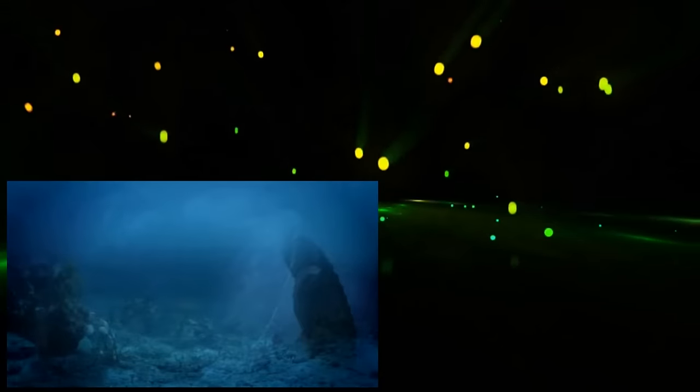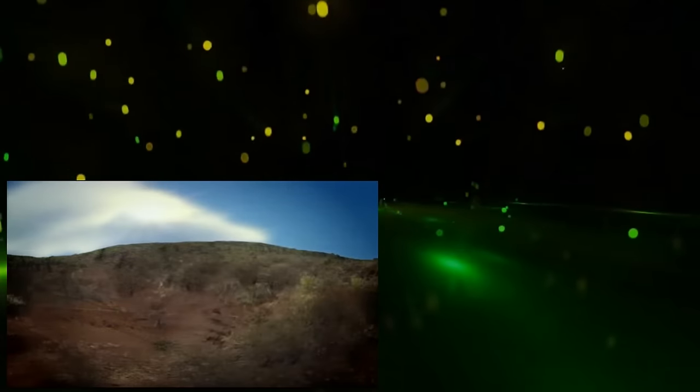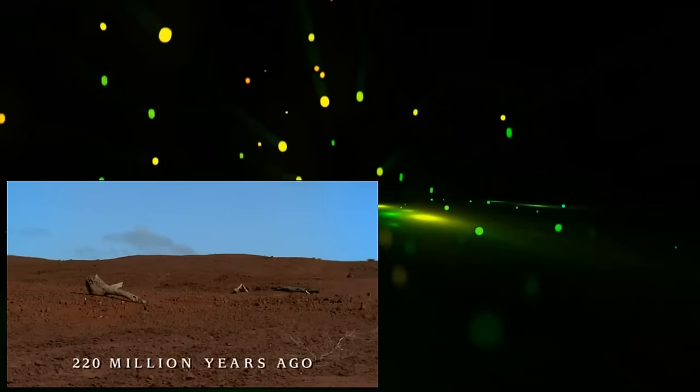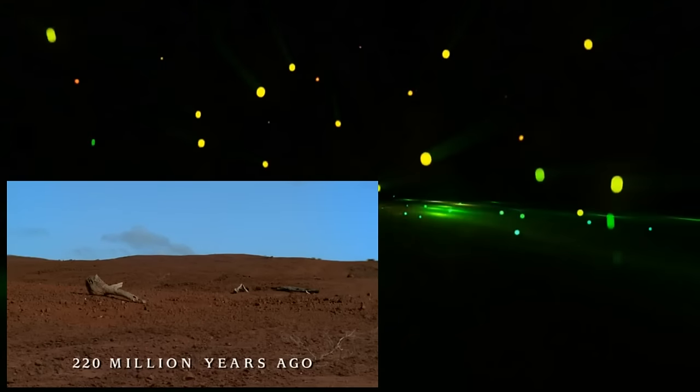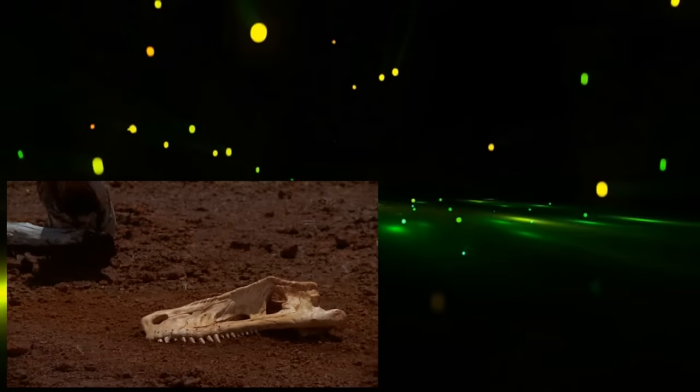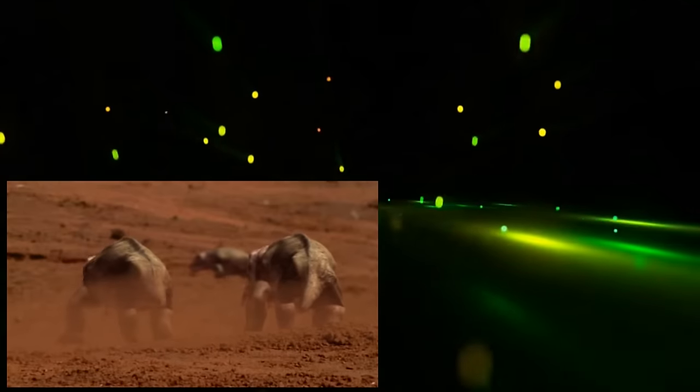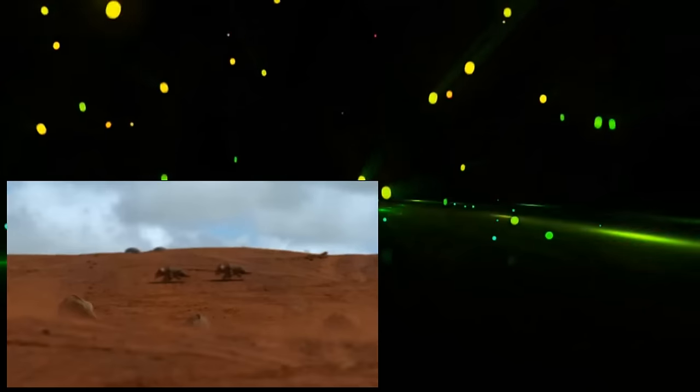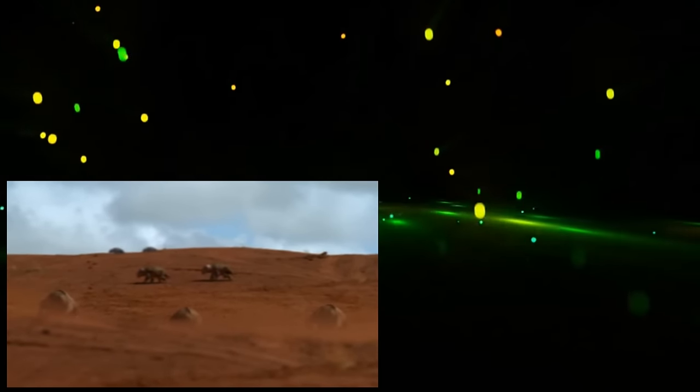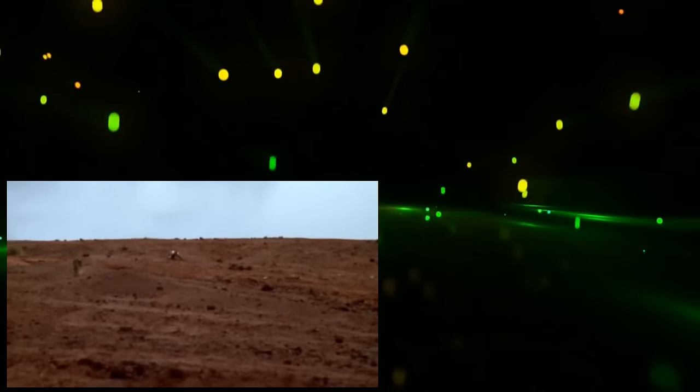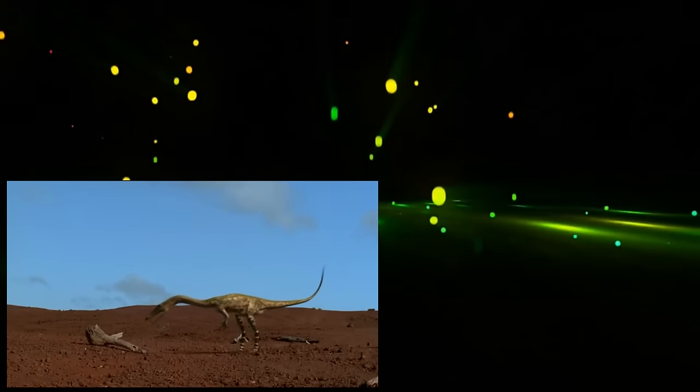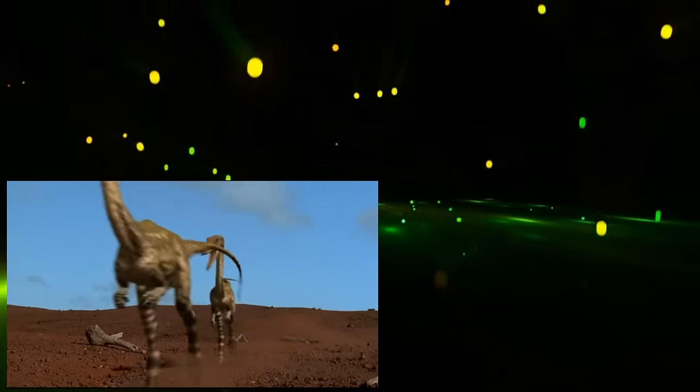However, first this series will go back even further to discover where dinosaurs came from. This is our own Earth during the Triassic period. Here there are no separate continents, just one giant landmass called Pangaea. It is a harsh place dominated by deserts. Out of this dry wilderness has appeared something revolutionary, a family of reptiles destined to shape the course of life on Earth for the next 160 million years. These are the first dinosaurs, and this is where our story begins.